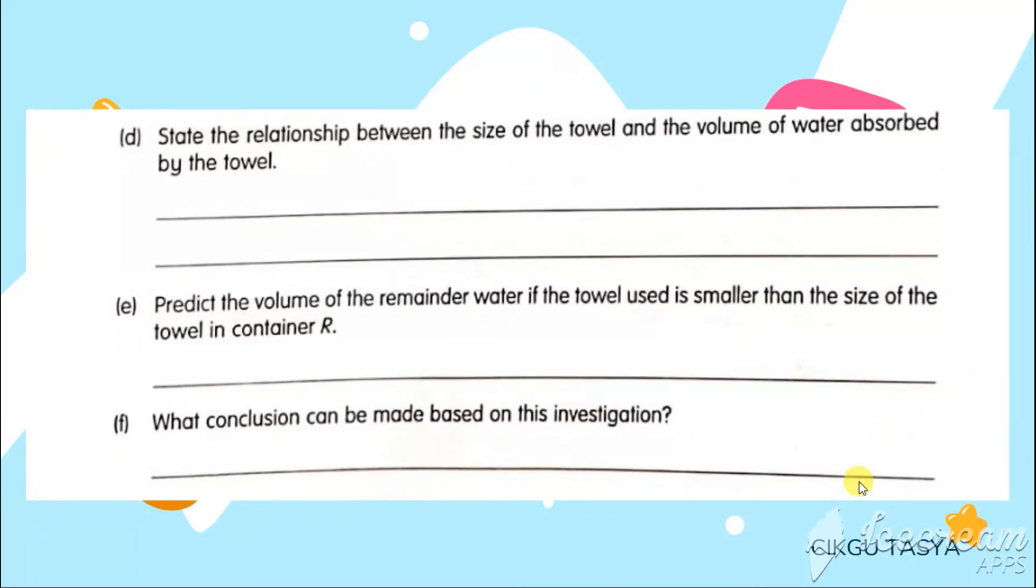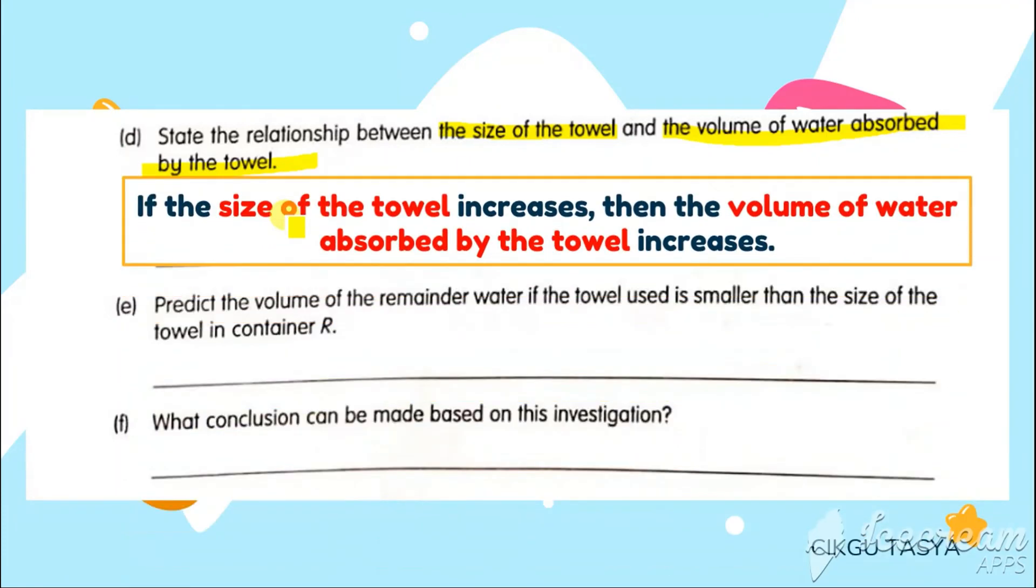State the relationship between the size of the towel and the volume of water absorbed by the towel. You have to state the relationship between the size of the towel and also the volume of the water. We have to put in all the size of the towel and also the volume of the water here. If the size of the towel increases, the volume of the water absorbed by the towel also increases. This is common sense, right?